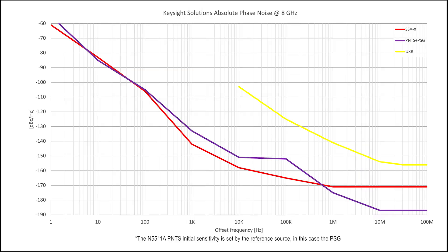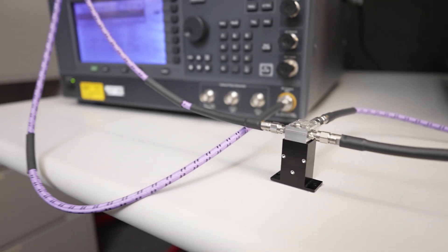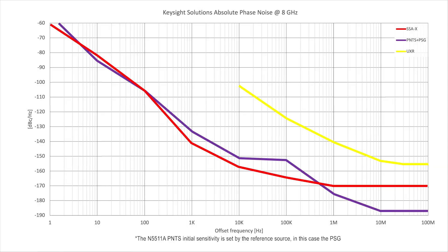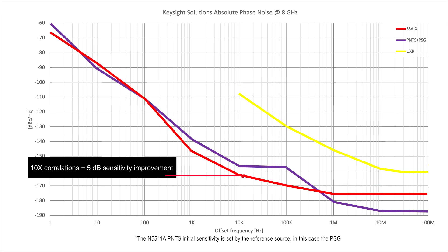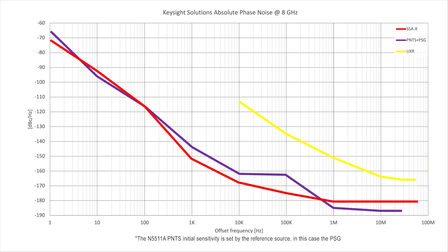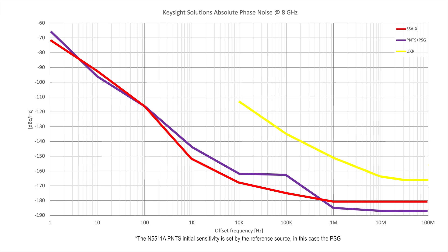Before the test setup, I'd like to show you the sensitivity of our three phase noise analysis solutions. Here we have a sensitivity chart showing how low a phase noise each analyzer can measure. The red trace represents the SSAX, the purple trace represents the PNTS, and the yellow trace represents the UXR. All three systems have two channels that split the DUT signal and perform cross-spectral averaging, removing instrument noise at the expense of time. This cross-correlation process improves sensitivity by 5 dB at every offset for every 10x increase in correlation number. The PNTS and SSAX perform similarly depending on offset frequency, while the UXR has the advantage at many gigahertz offsets.